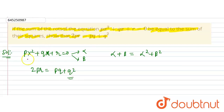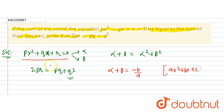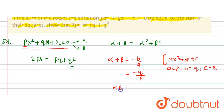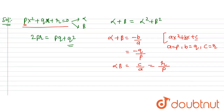From the quadratic equation, we know that the sum of roots alpha + beta = -b/a. For the equation px² + qx + r = 0, a = p, b = q, and c = r. So alpha + beta = -q/p. The product of roots alpha·beta = c/a = r/p.